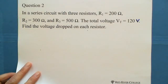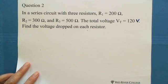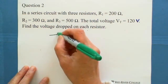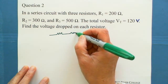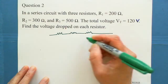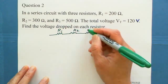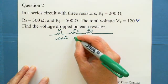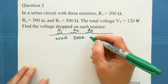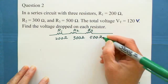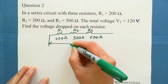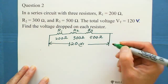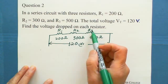The next question: in a series circuit with 3 resistors — R1, R2, R3 — R1 equals 200 ohms, R2 equals 300 ohms, R3 equals 500 ohms. The total voltage drop is 120 volts. We are looking for the voltage drop on each resistor.